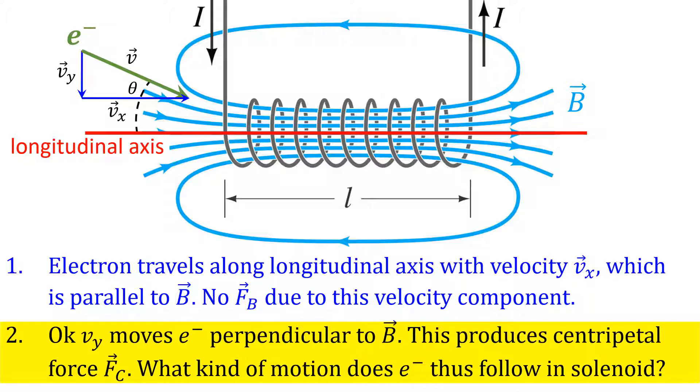This is a centripetal force. This force deflects the path of the electron and continues to act on the electron, which results in the electron moving in a circle.